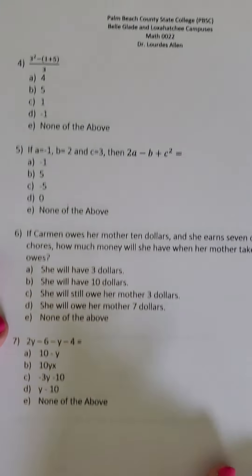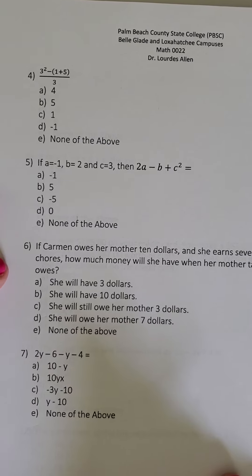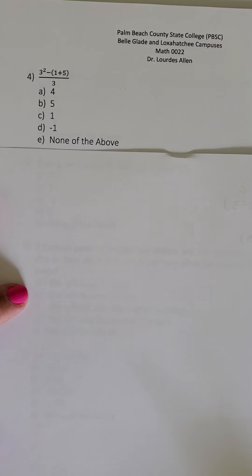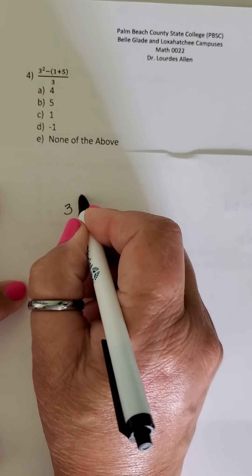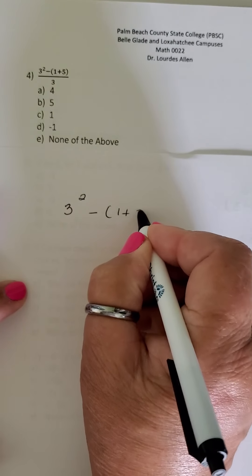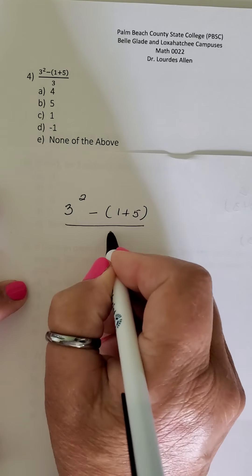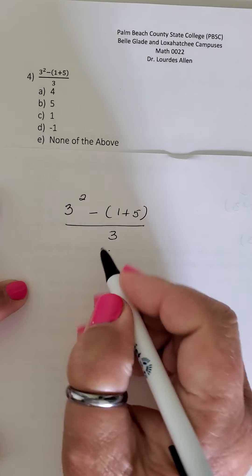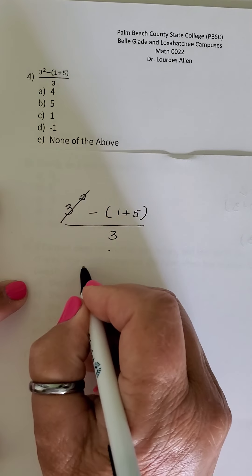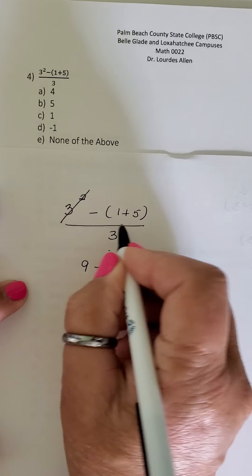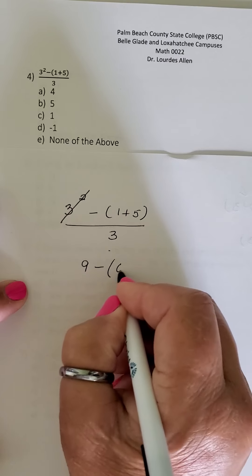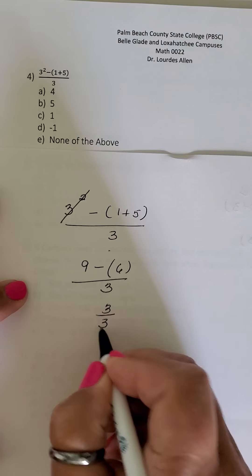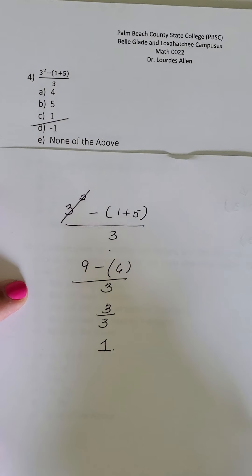Let me do two more problems in this video, going five by five. It says: three to the second power minus one plus five divided by three. Let me do the power first — three to the second power is nine. Then in parentheses, one plus five is six, everything divided by three. Nine minus six is three, and three divided by three is one. So the answer is letter C.